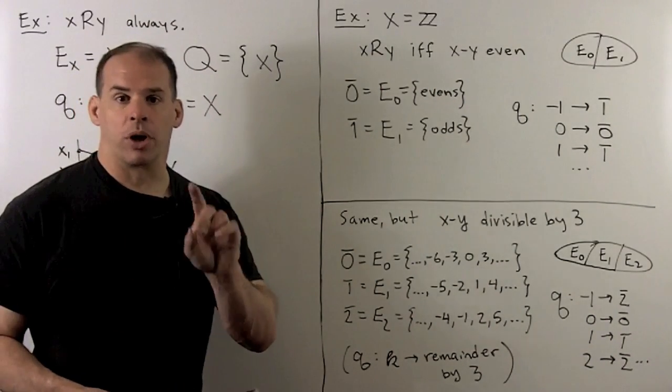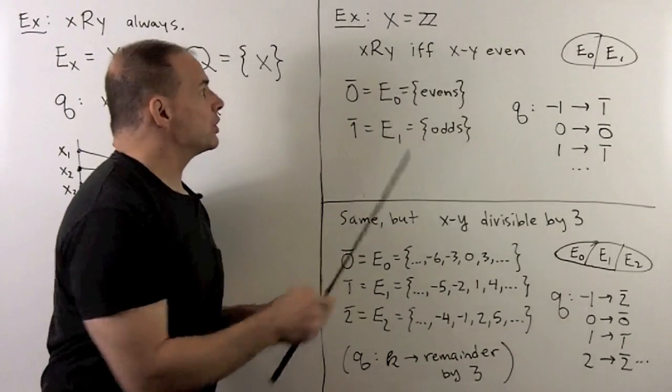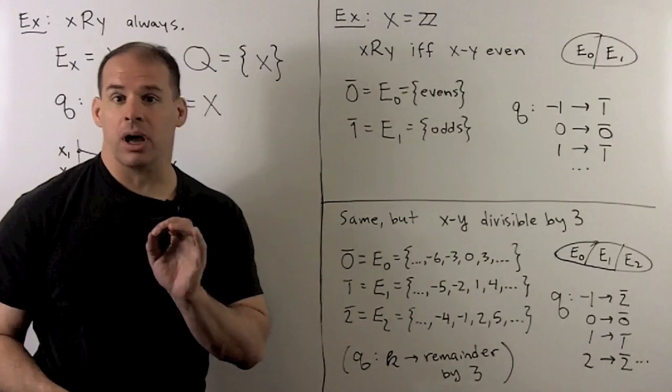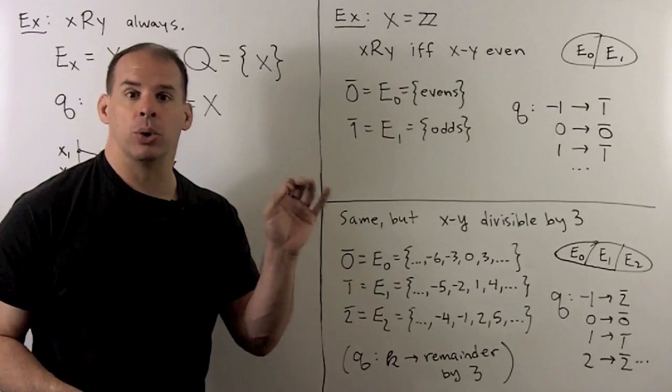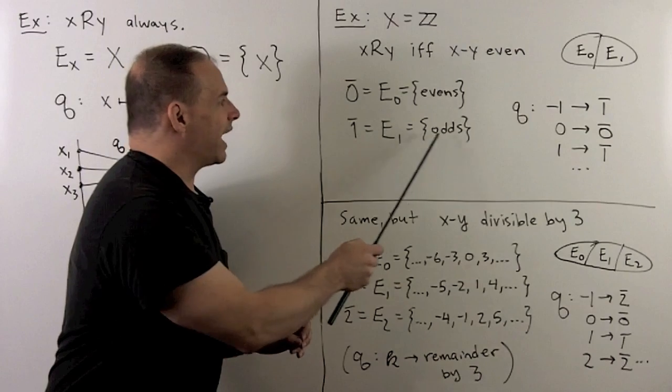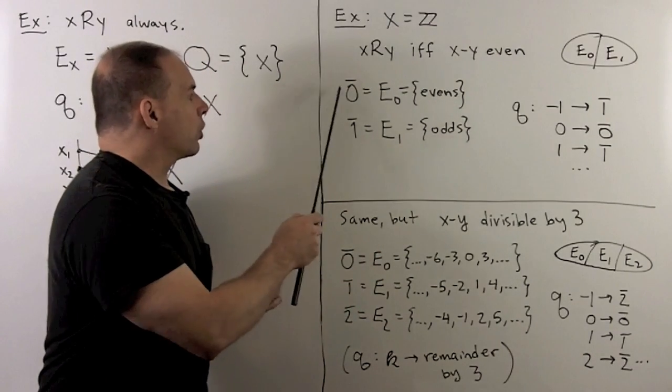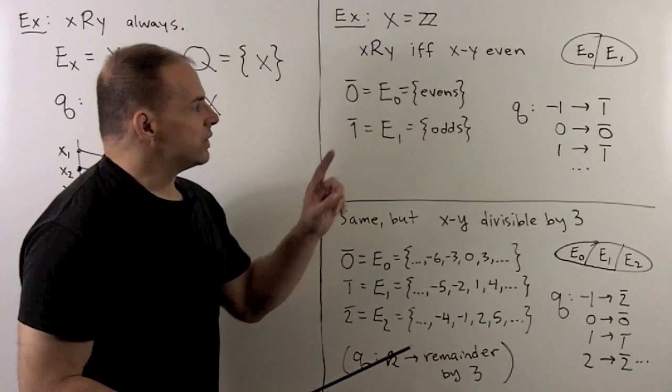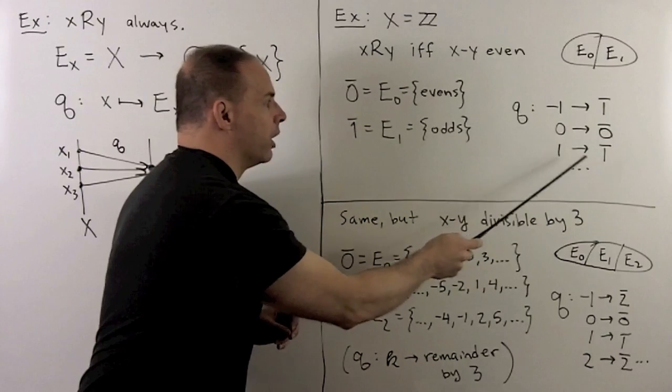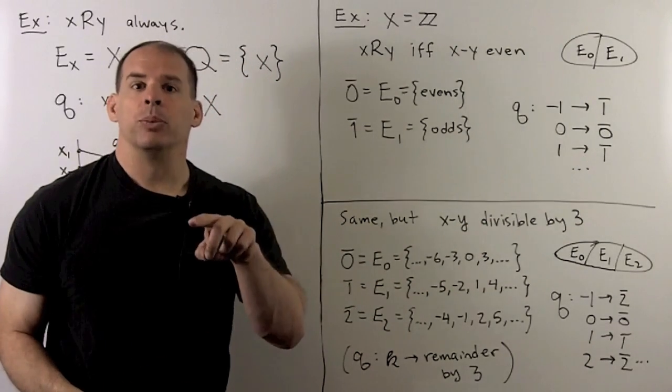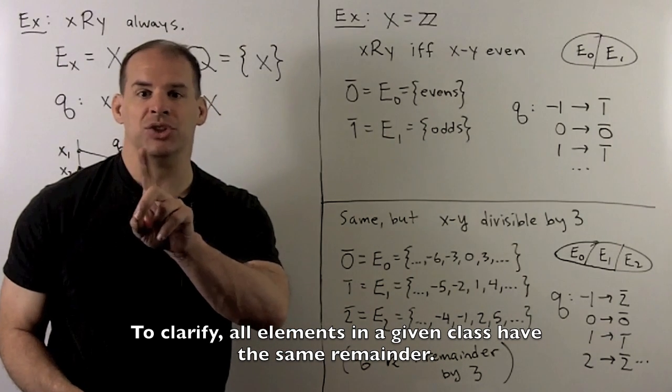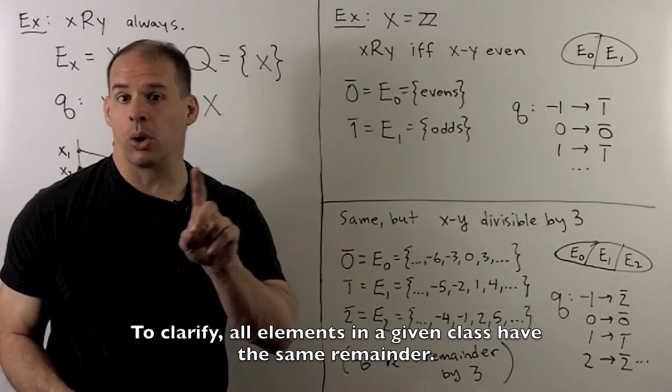Now, for an example that's a little bit more concrete, let's take X to be the integers. We'll have X and Y are related if and only if X minus Y is an even number. We saw here, there are two equivalence classes. So, the equivalence class for zero is the evens. The equivalence class for one is the odds. So, to be suggestive, I'll call these zero bar and one bar. If we take a look at what Q is doing, it's going to send minus one to one bar, zero to zero bar, one to one bar. You'll note here, what we're getting is the remainder upon division by two. So the remainder is always going to be a number between zero and one minus the number you're dividing by. So, here it's going to be zero or one.